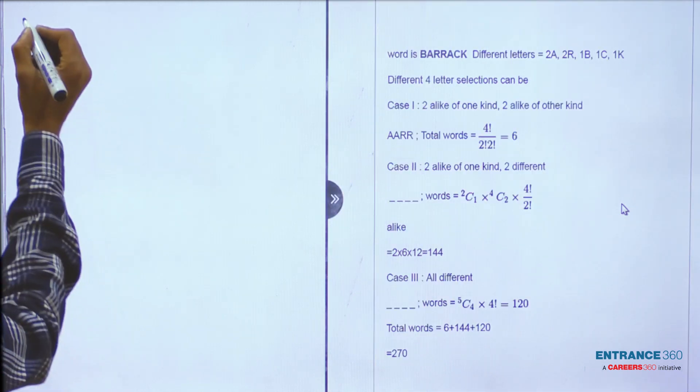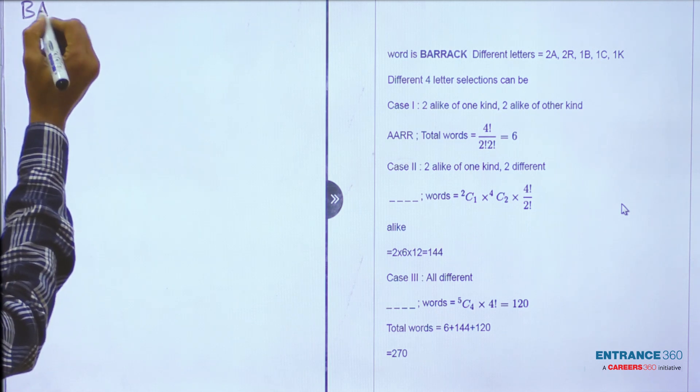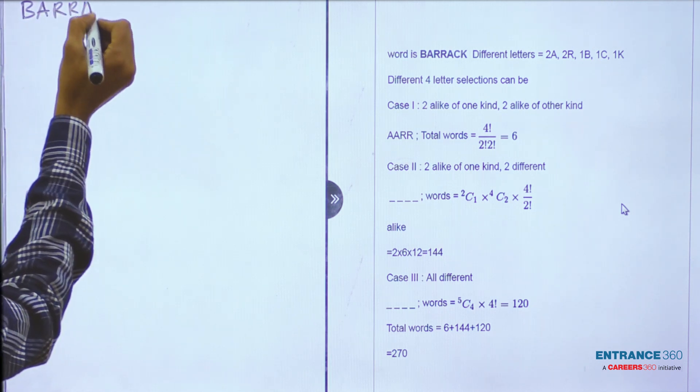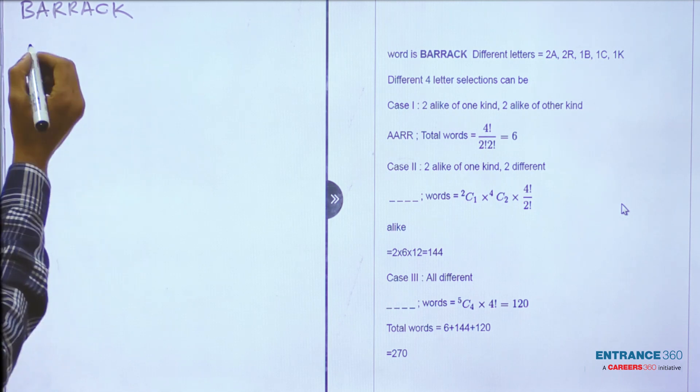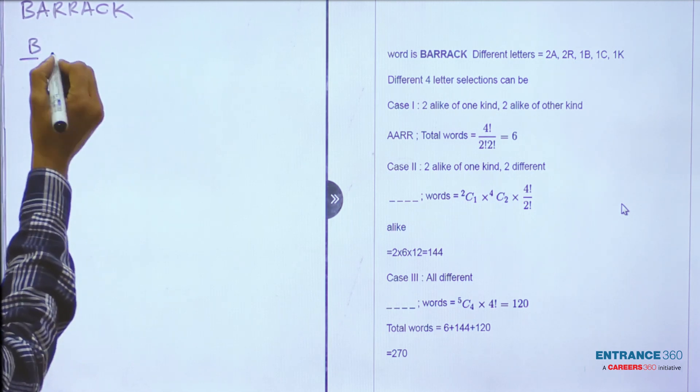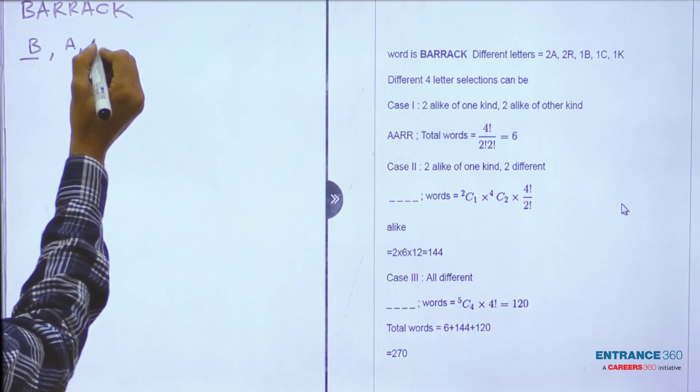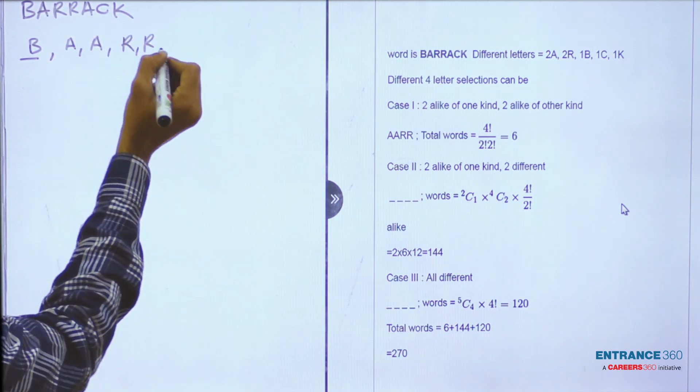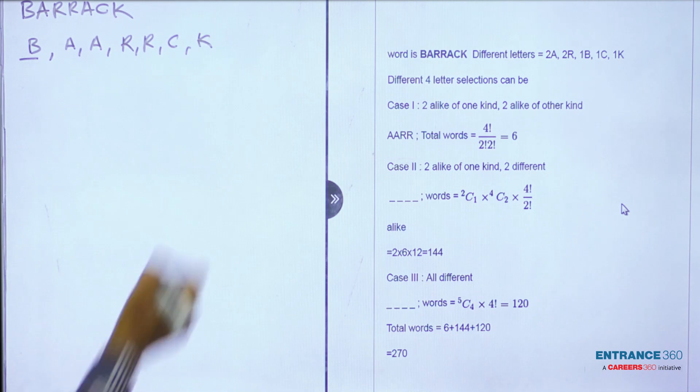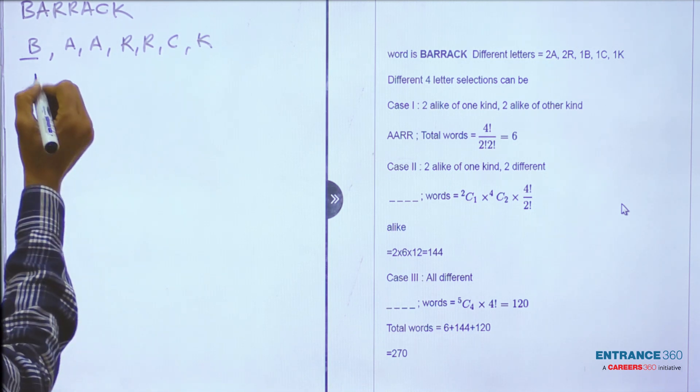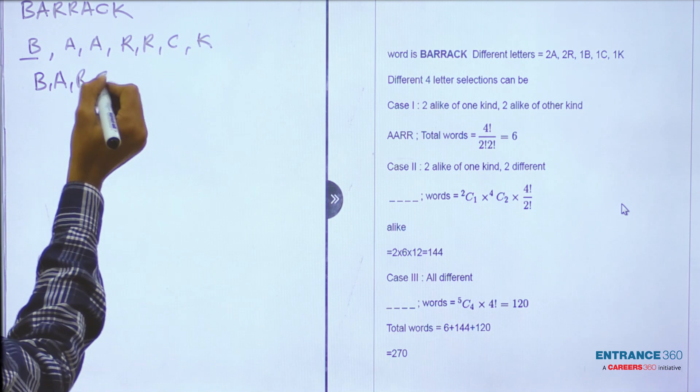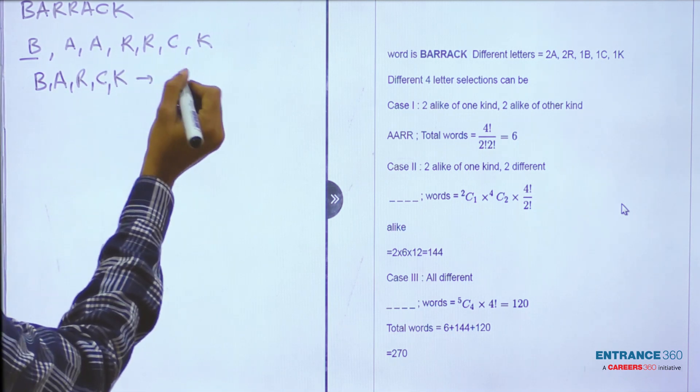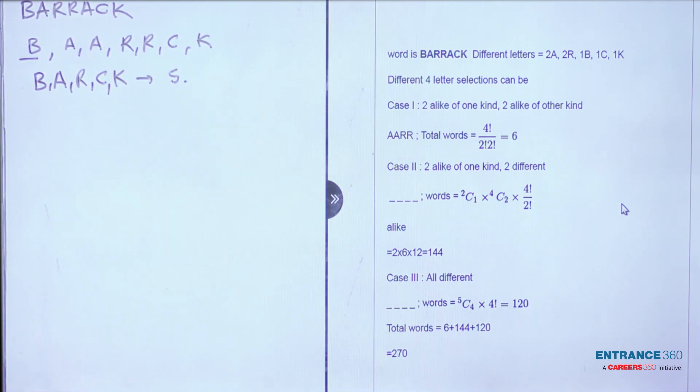We have the given word B-A-R-R-A-C-K. The word is B, then A, two A's are there, then R-R, C, K. So total unique letters are B-A-R-C-K. There are total five unique letters: B, A, R, C, K.